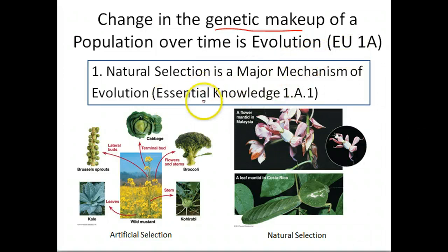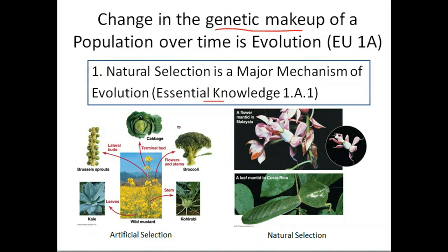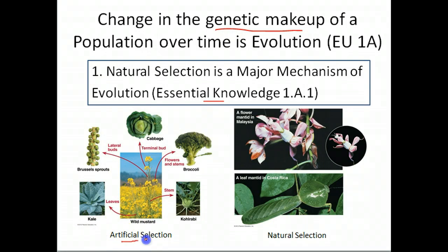The first essential knowledge you have to remember when talking about evolution is that natural selection is the major mechanism of evolution. Let me quickly compare artificial selection and natural selection.